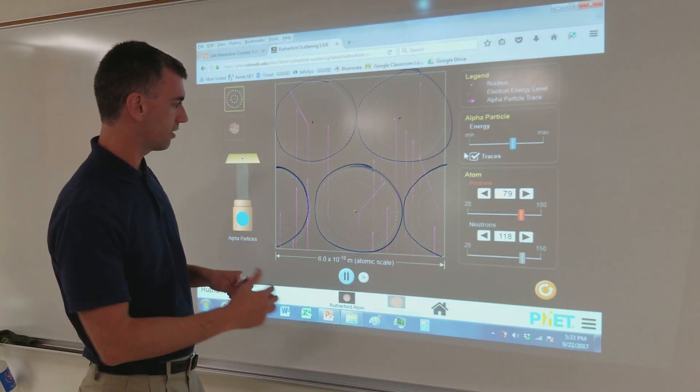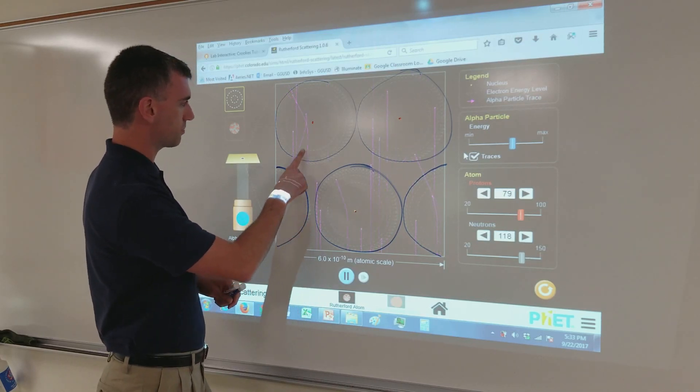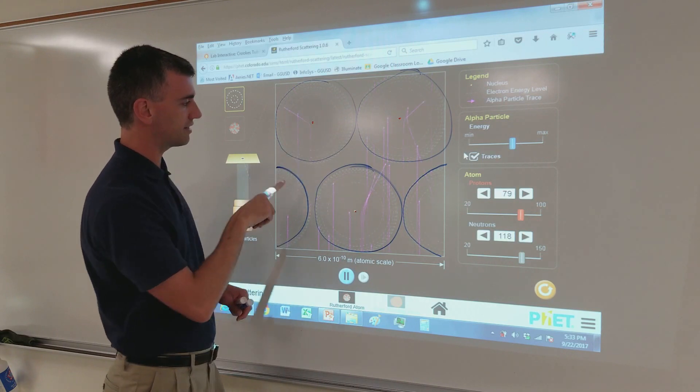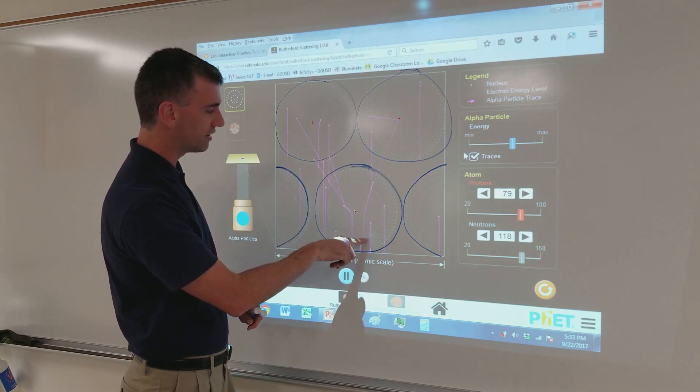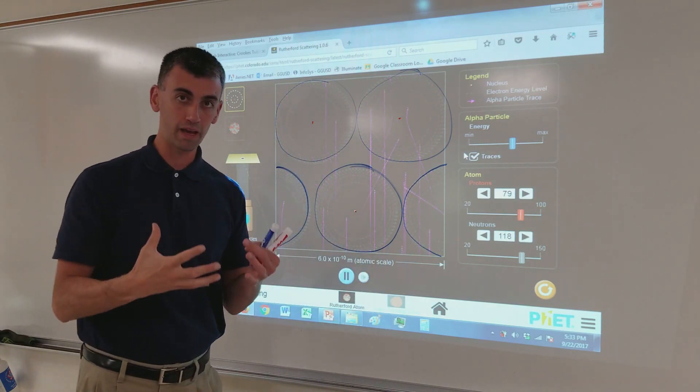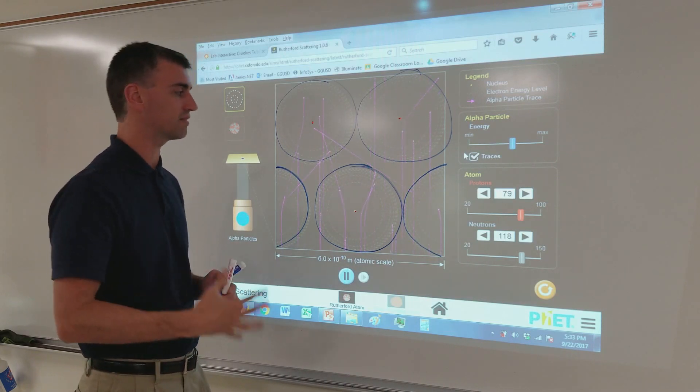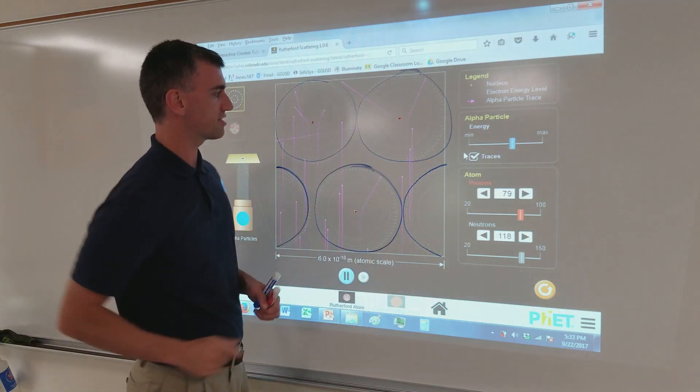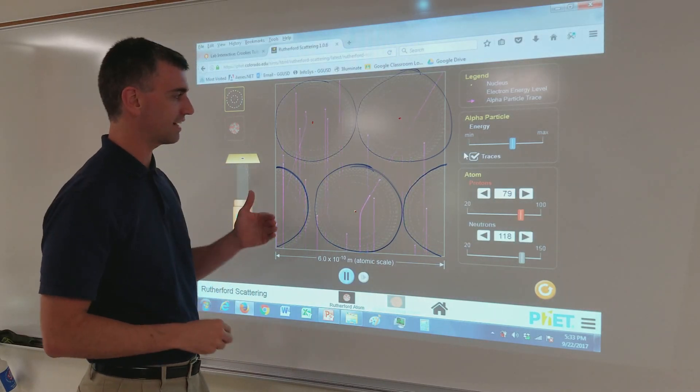What we're seeing here is the traces of these particles as they go through. And we see that as they collide with these positive nuclei, these positive alpha particles are repelled because of the same charge as the positive nuclei.